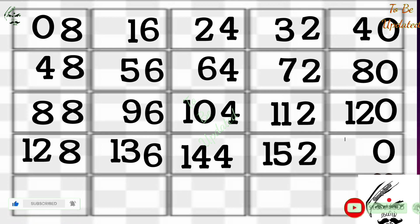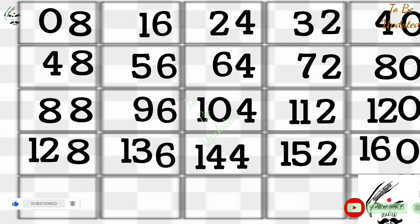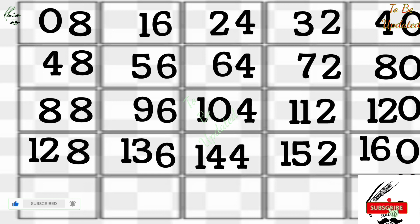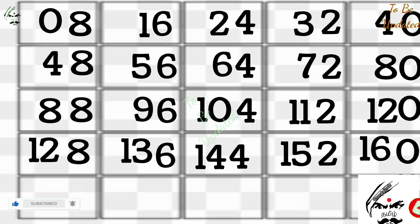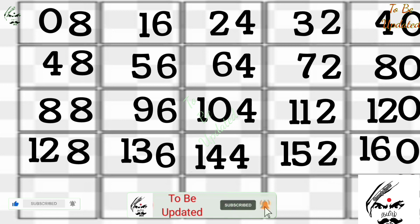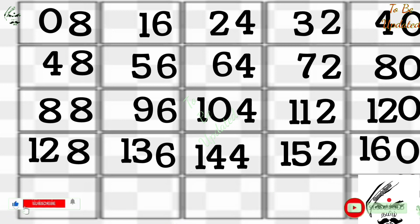Now see the complete 8 table: 1×8=8, 2×8=16, 3×8=24, 4×8=32, 5×8=40, 6×8=48, 7×8=56, 8×8=64, 9×8=72, 10×8=80, 11×8=88, 12×8=96, 13×8=104, 14×8=112, 15×8=120, 16×8=128, 17×8=136, 18×8=144, 19×8=152, 20×8=160.